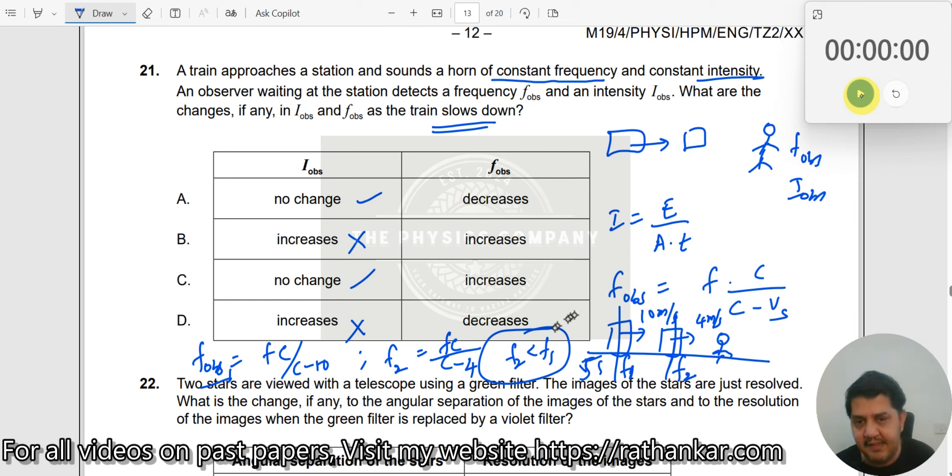F observed decreases as the train is coming towards you. So, decreases, where is decreases here? No change and decreases. The answer is here.